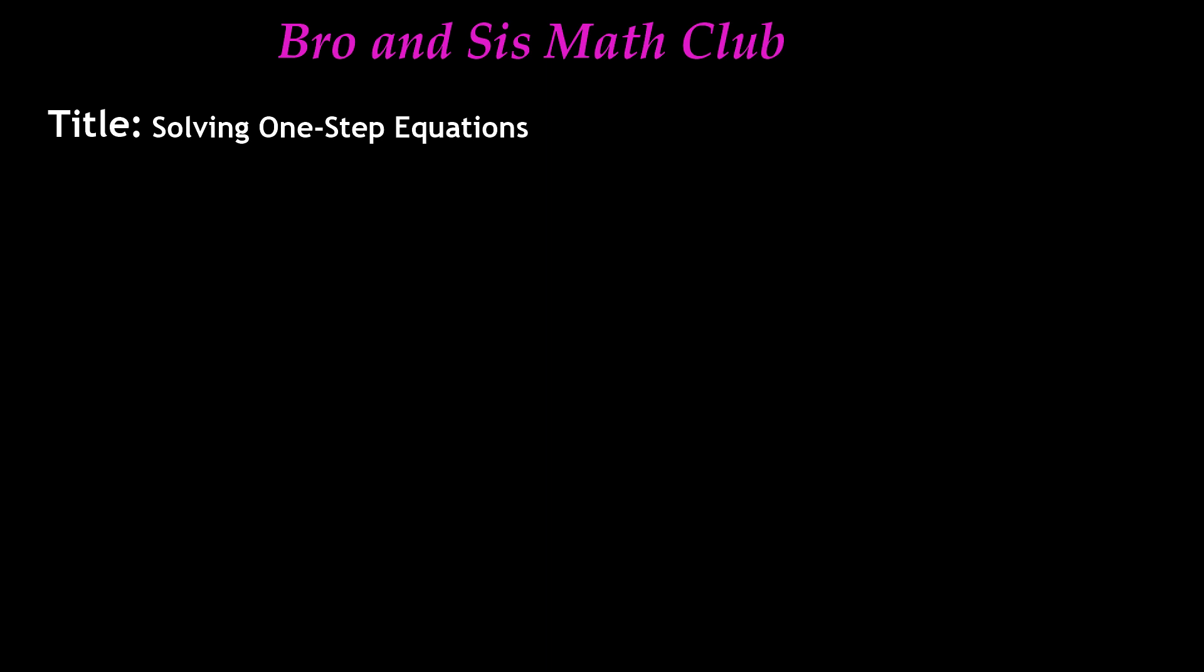We know that an equation is just a mathematical way of saying that two expressions are equal to one another. When we're solving an equation, our goal is to isolate the variable. That means we want to get rid of everything else surrounding the variable so we can find out what its value is. A variable is just an unknown value represented by a lowercase letter.